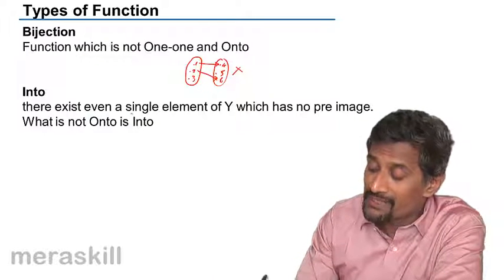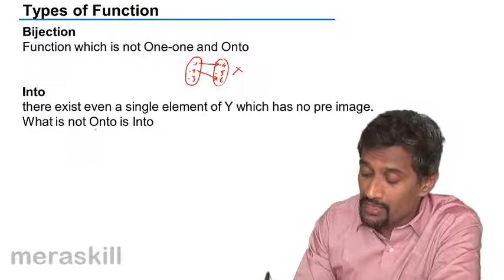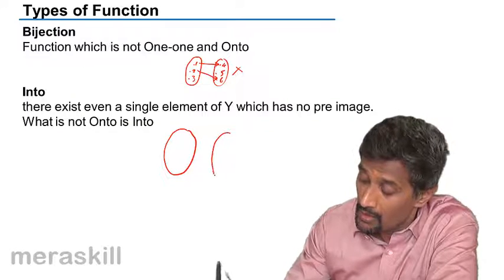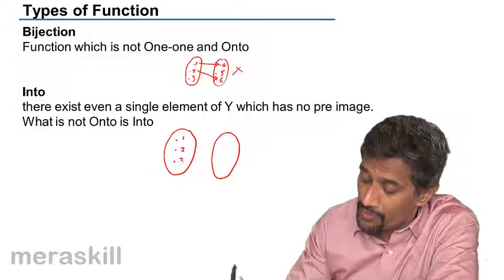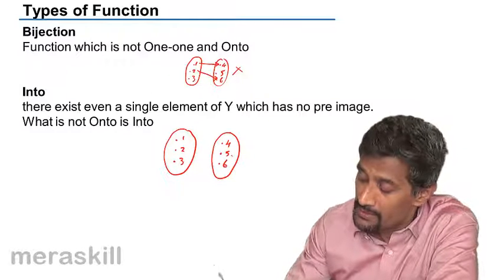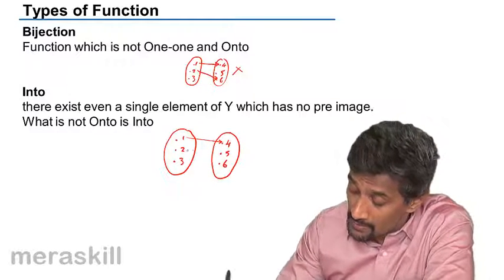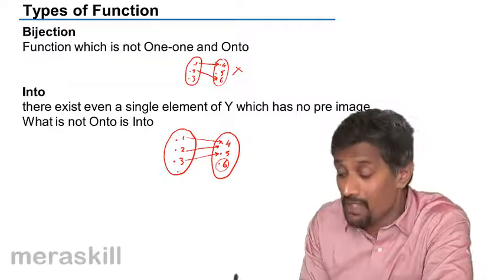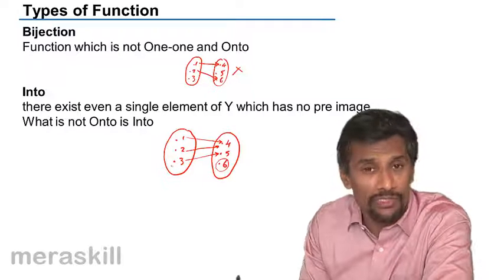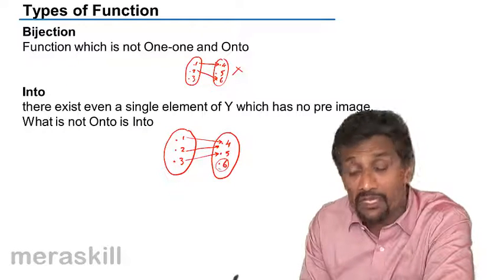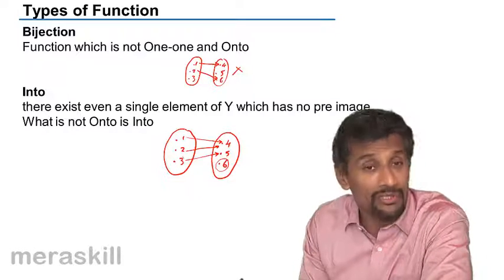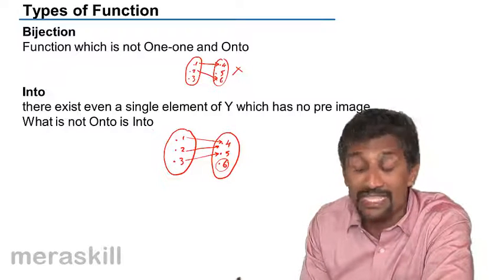In an into function, there exists even a single element of Y which has no pre-image — that means whatever is not onto. Suppose you have {1, 2, 3} mapping to {4, 5, 6}. Elements 1 and 4 are linked, 2 and 4 are linked, and 3 and 5 are linked. That means element 6 does not have a pre-image. Then we call it an into function. Even if one such element exists that has no corresponding domain, we call it an into function.